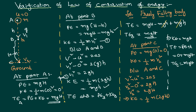Now if you notice: at point A, total energy is MGH; at point B, total energy is MGH; at point C, total energy is also MGH. From all these we can conclude that the total energy of the system at all points is constant, or the same. This is called the law of conservation of energy — energy is neither created nor destroyed; it just converts from one form to another, but the total mechanical energy of a system always remains constant, provided there is no loss of energy.